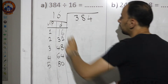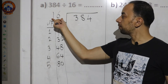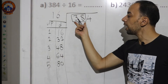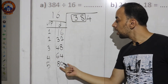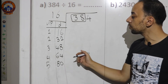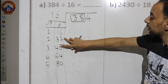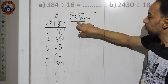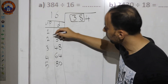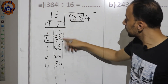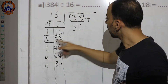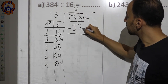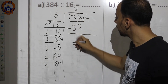Because we're dividing by a two-digit number, we take a two-digit number from inside: 38. Search for 38 in the table — it's not there, but the nearest number smaller than 38 is 32. Put 32 down and 2 up. Subtract: 38−32: 8−2=6, 3−3=0.